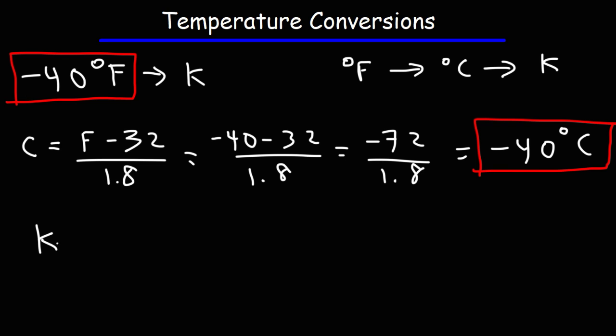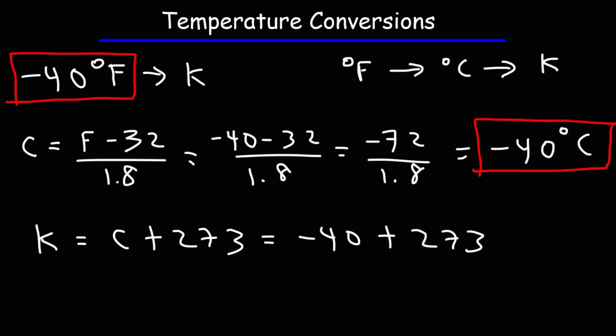Now that we have the Celsius temperature of −40, we can get the Kelvin temperature. Since this is rounded to the nearest whole number, we'll use 273. So it's −40 plus 273, which is the same as 273 minus 40, giving us 233 Kelvin. That's how you can convert from Fahrenheit to Kelvin: convert Fahrenheit to Celsius first, and then Celsius to Kelvin.